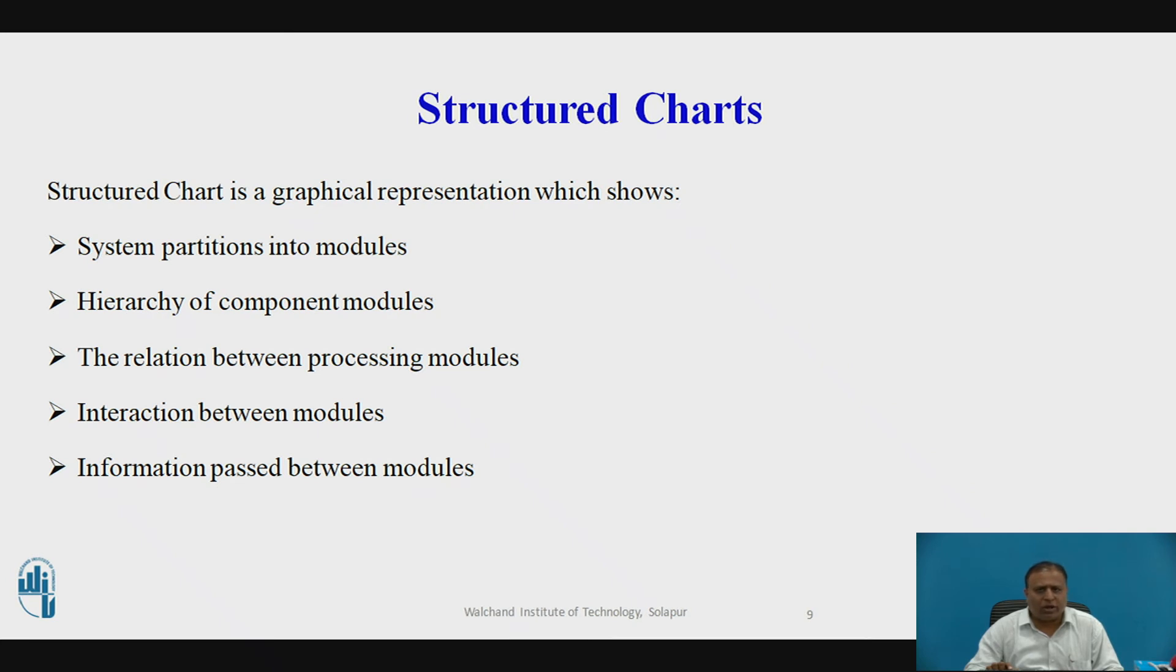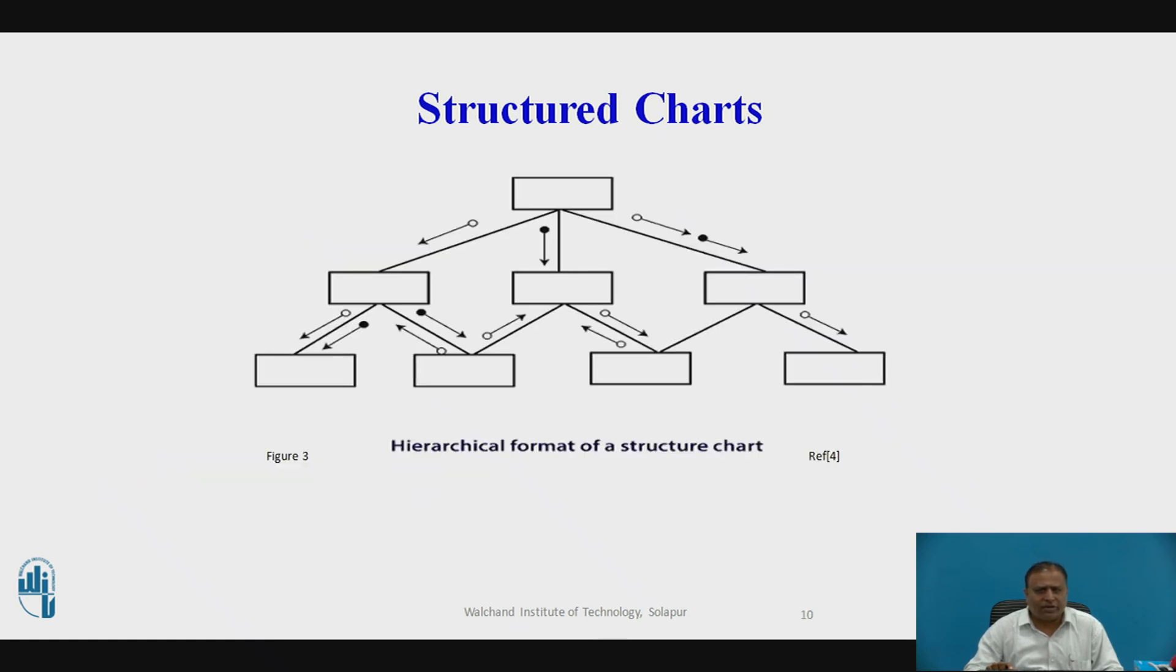Components are read from top to bottom and left to right where a module calls another. It views the called module as a black box passing required parameters and receiving results. Depending on the complexity of the application, a prototype is included as a part of the functional design. A prototype of complex functionality is easier for the user to understand than a written description. This is the diagram of structure chart. It is the hierarchical format of structure chart where the data flows from one module to another module from top down approach.